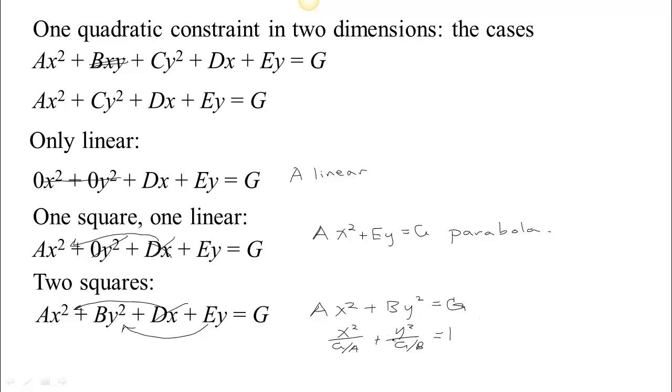If both of these are positive, so that would assume that g by b and g by a are both positive, then you're going to have an ellipse. But if these have opposite signs, so if maybe g by a is negative but g by b is positive, then we're going to have a hyperbola.